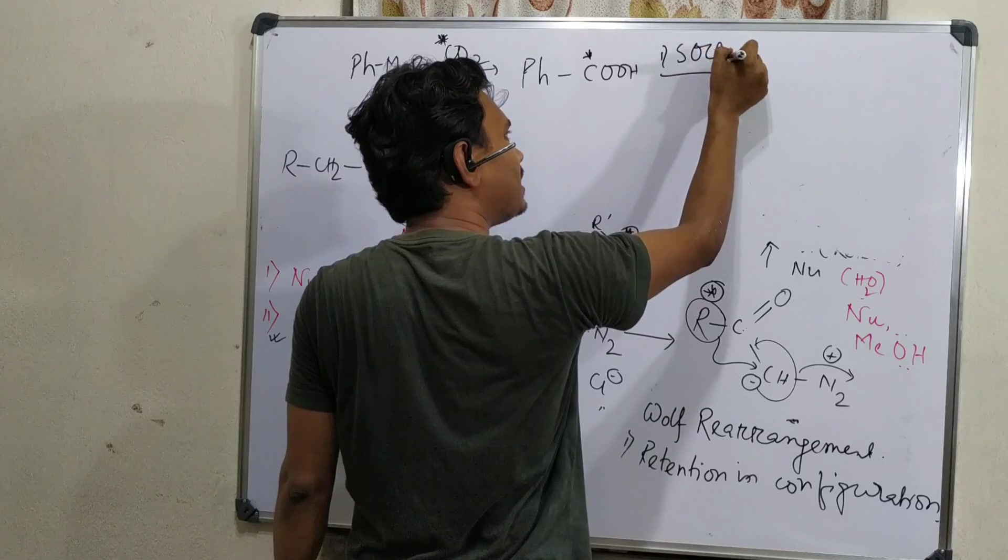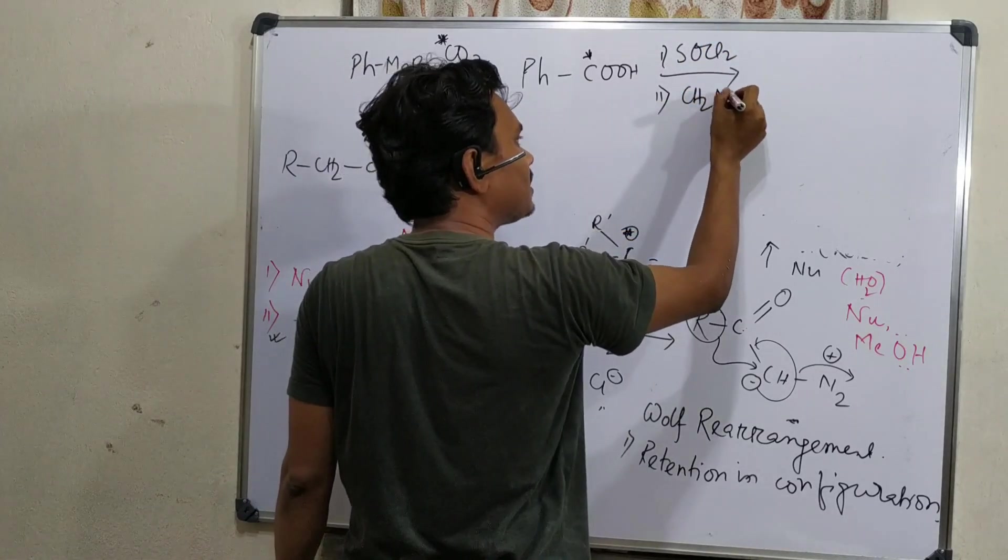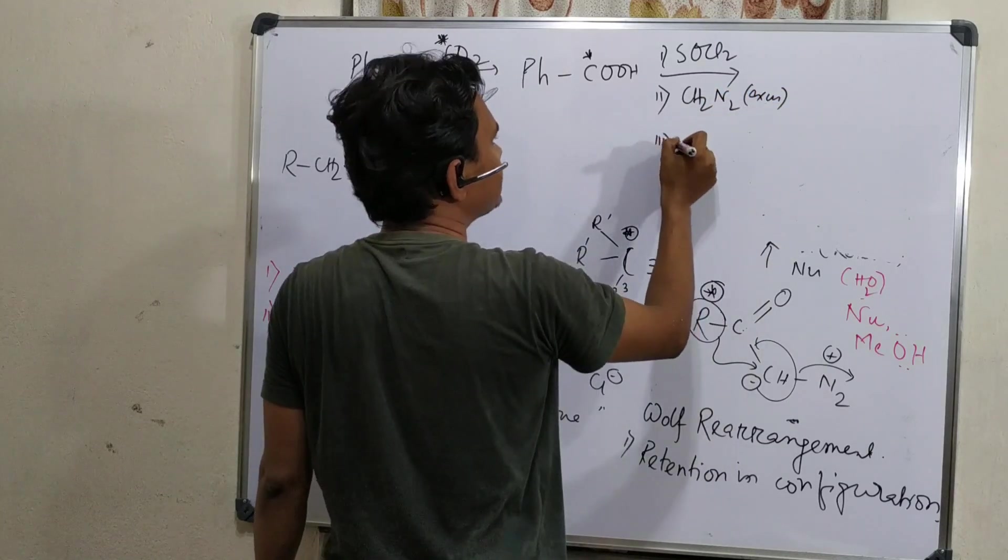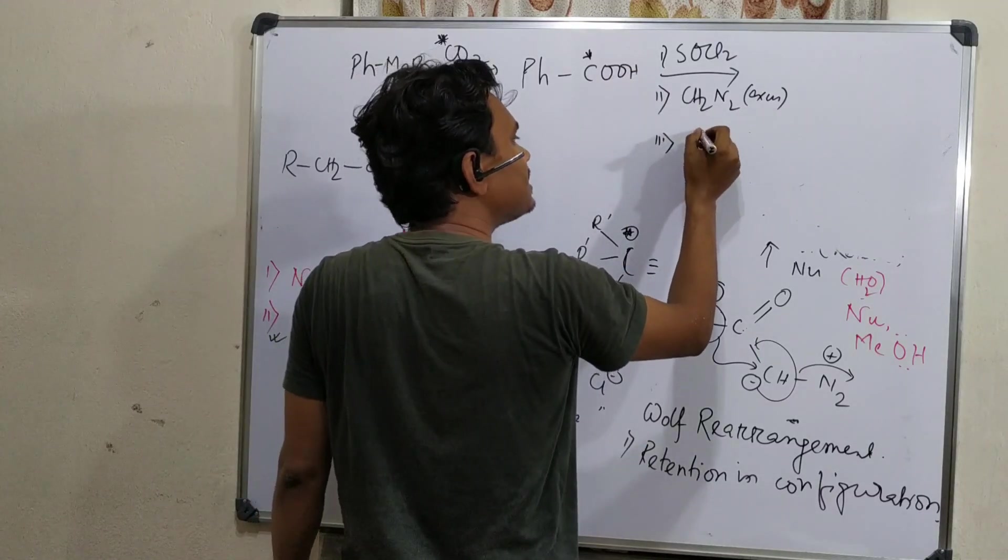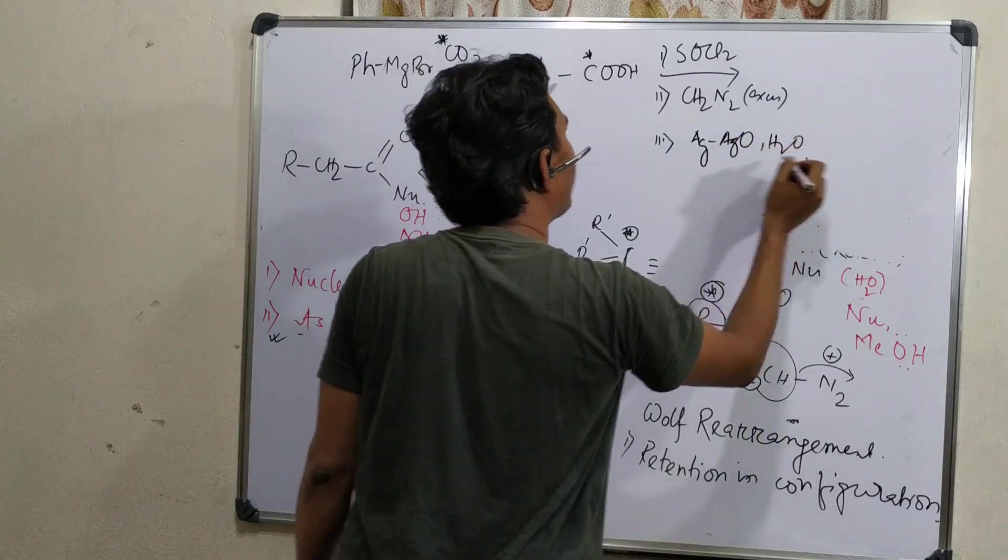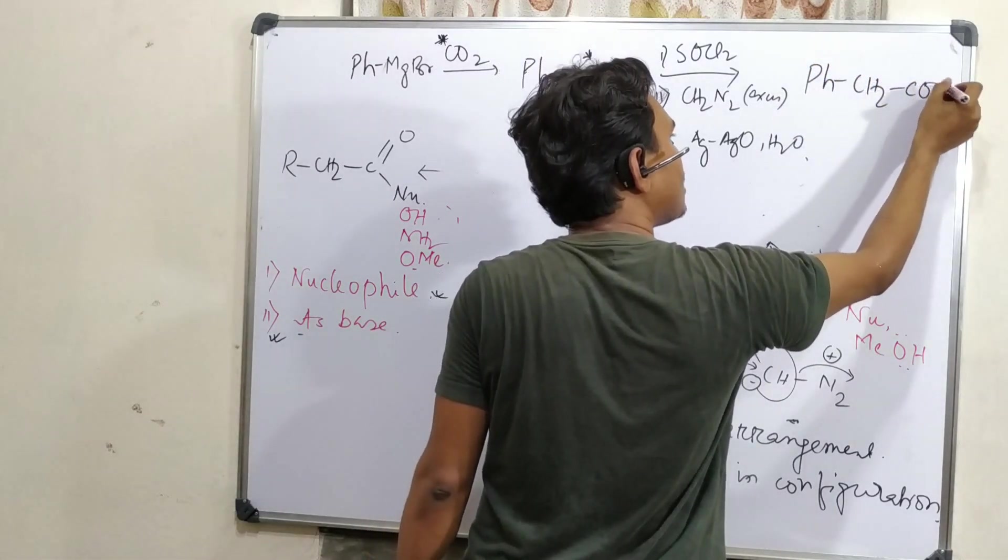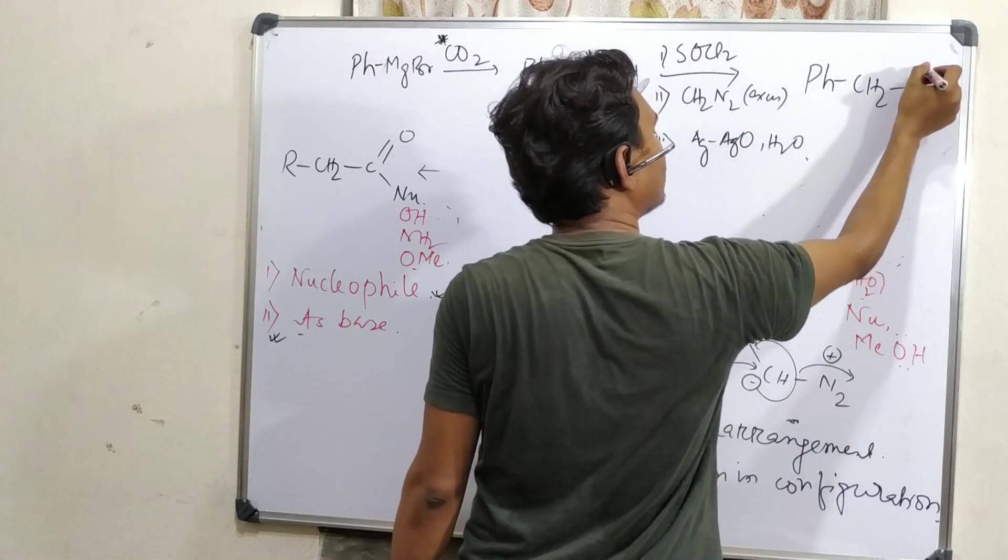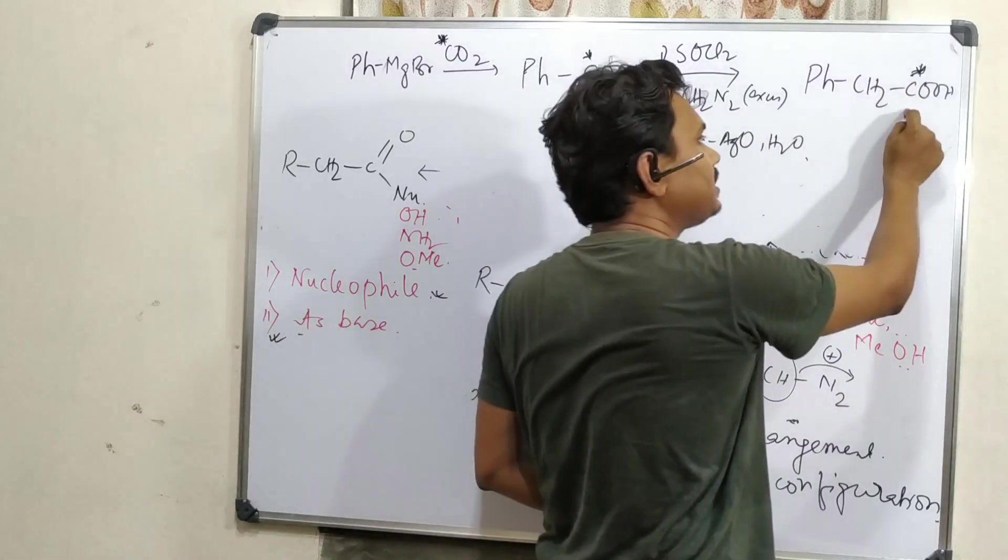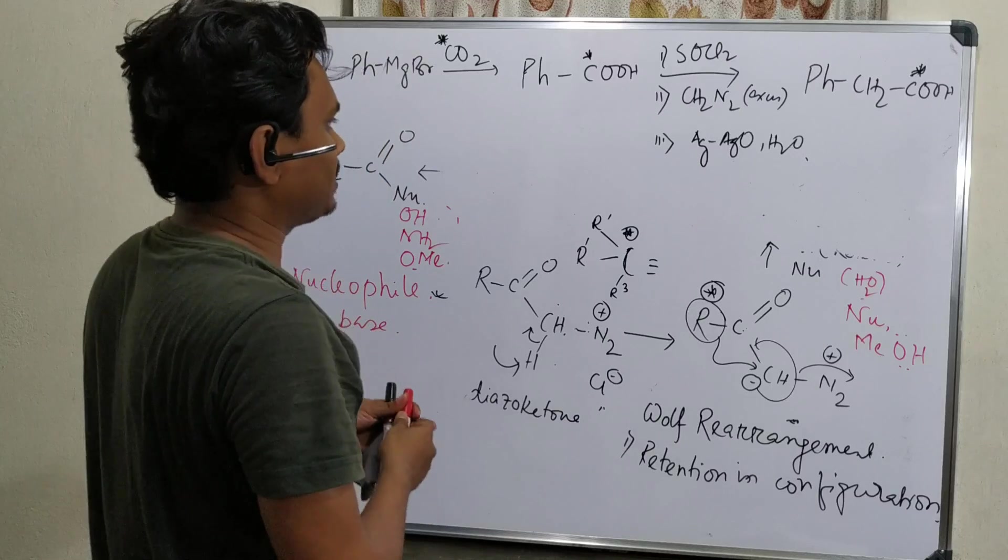After that, if we do Arndt-Eistert reaction, what do I mean? Stage 1: thionyl chloride. Stage 2: diazomethane, and it is excess, I'll explain why. And stage 3 is silver oxide water. So finally, the product what we will achieve: Ph-CH2-COOH, and we can decarboxylate this carboxylic acid. We can do that test and find out that the labeling carboxylic carbon is present here.